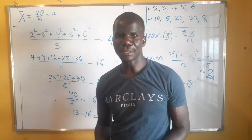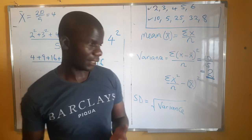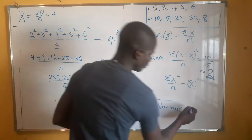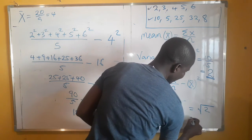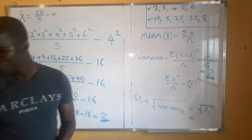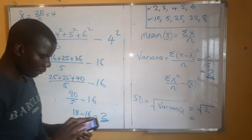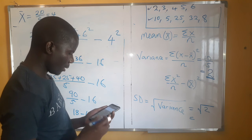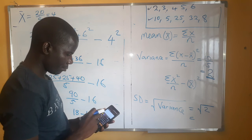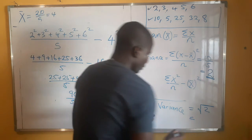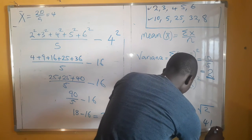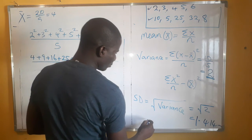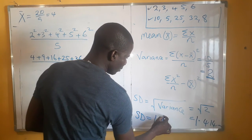Both formulas gave us variance equals 2 — so choose whichever is easier. The next step is to find standard deviation. The formula is simply the square root of variance. Since variance is 2, standard deviation equals the square root of 2. Using a calculator, that gives us 1.414... Rounded to three significant figures, standard deviation equals 1.41.